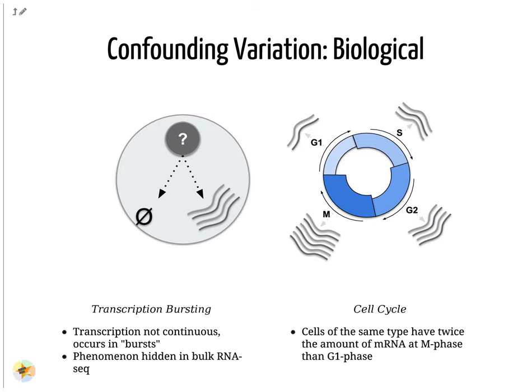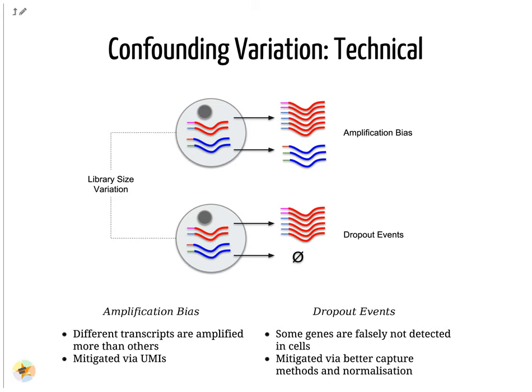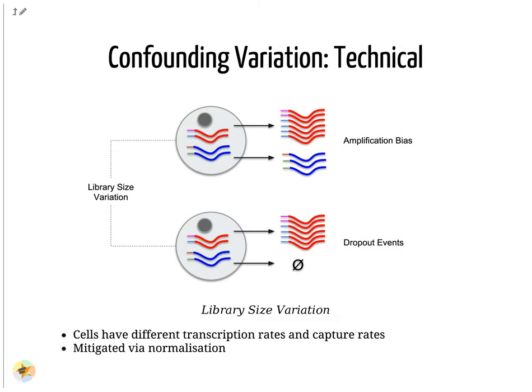Confounding technical variance appears in three forms: amplification bias, dropout events, and library size variation. Amplification bias can be mitigated by UMIs as demonstrated before. Dropout events give rise to the prevalent zeros in the count matrices, and their effect can be reduced by using clever normalization techniques such as the pooling method shown previously, as well as by using better sequencing methods. Library size variation arises for a variety of different reasons, but is the main source of variation within an analysis. Like bulk RNA-seq, this is reduced with good normalization methods.